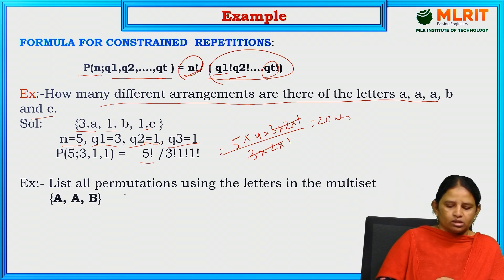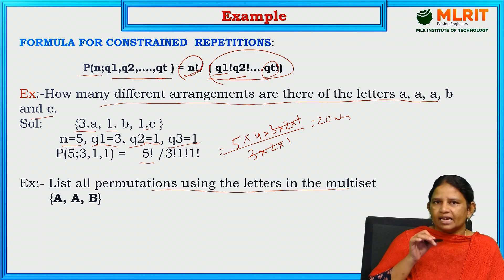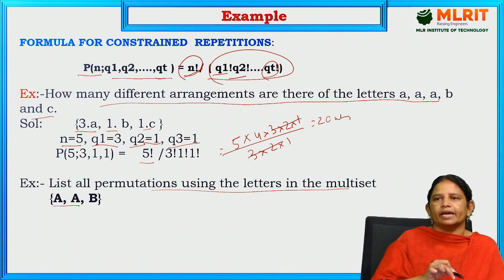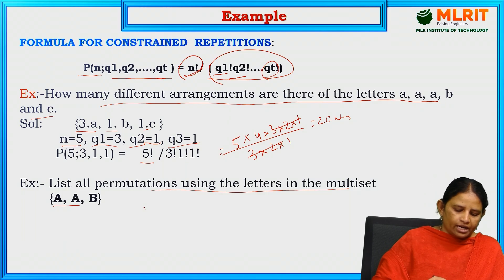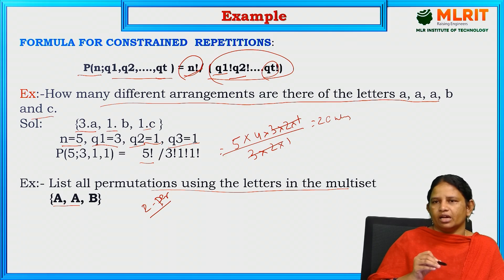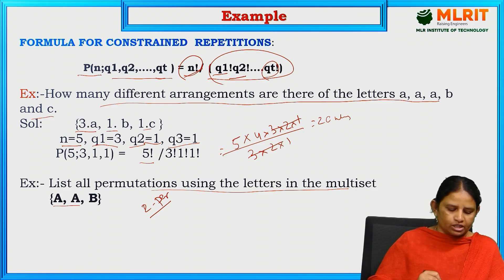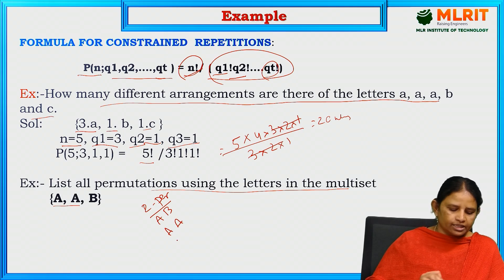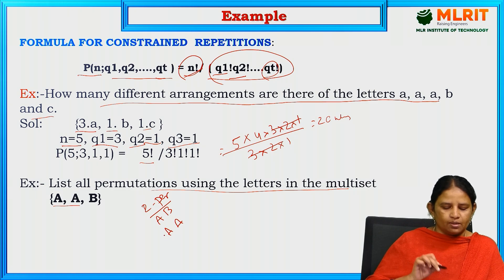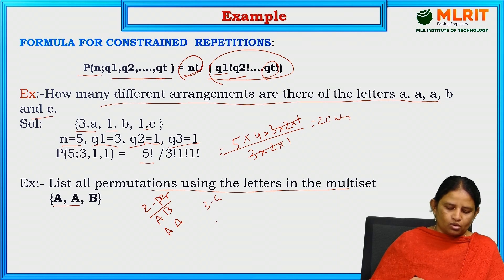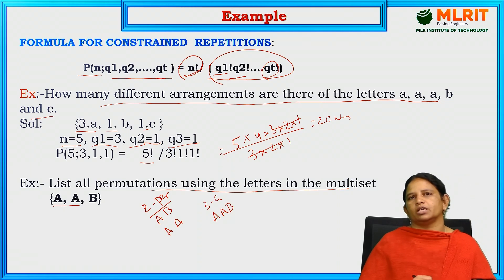Next, list all the permutations using the letters in the multiset. How many permutations are possible? Nothing is specified — you can form either 2-letter or 3-letter arrangements. Using A up to 2 times and B 1 time: for 2-letter permutations, every arrangement consisting of 2 letters — A, B and B, A and A, A — there are these possibilities. For 3-letter combinations, A, A, B is the only one possibility.